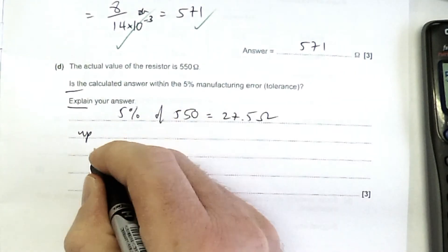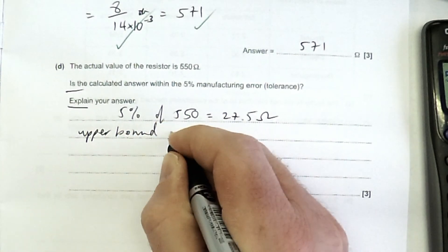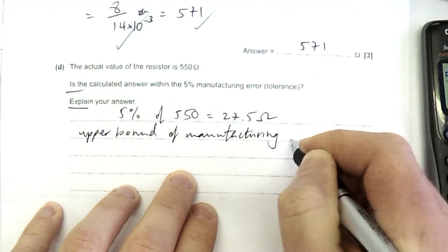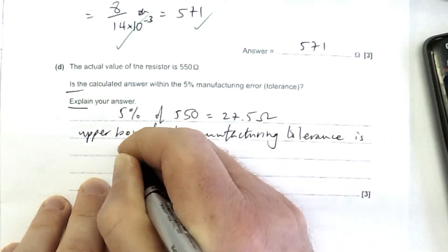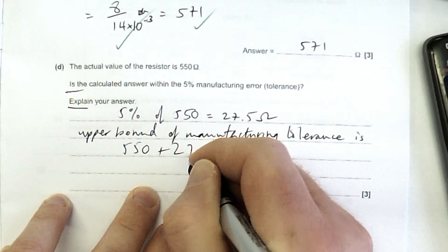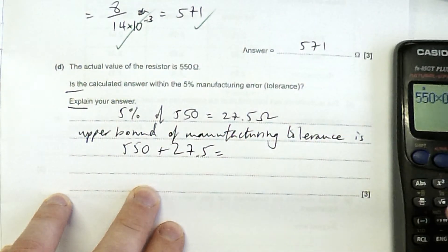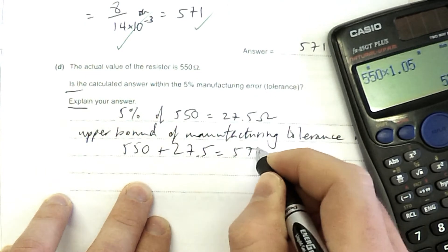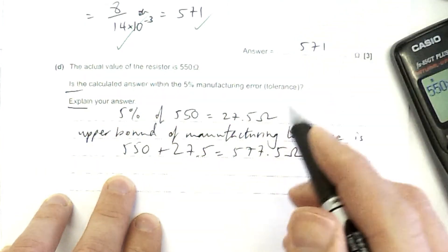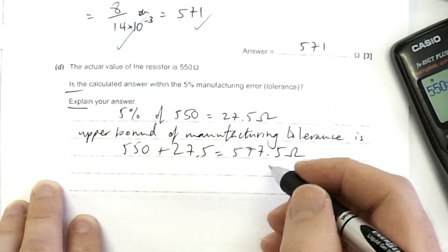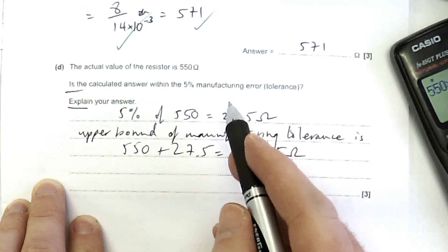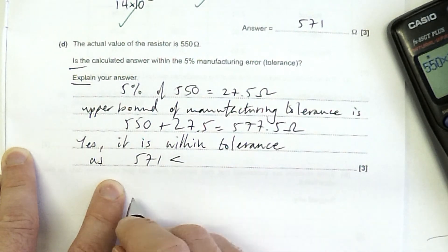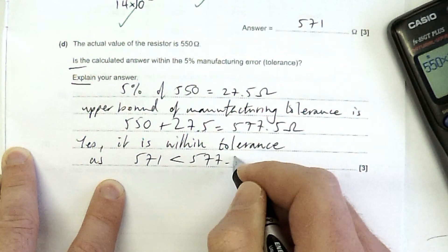So the upper bound of the maximum possible manufacturing tolerance is 550 plus 27.5. Obviously, the shortcut would be just to be 550 times 1.05, 577.5 ohms. Well, that's the maximum possible value and still being within their tolerance. And you just need to explain that, yes, it is within as 571 is less than 577.5 ohms.